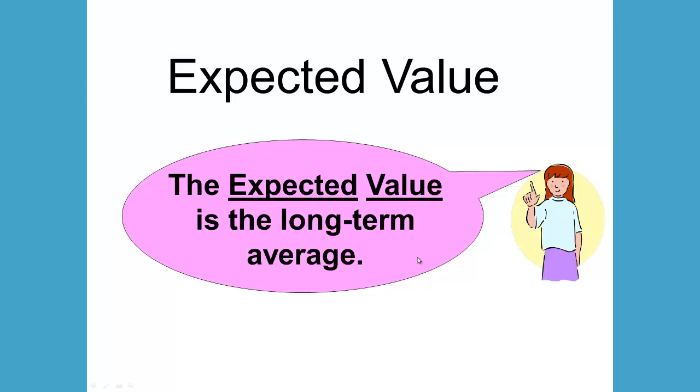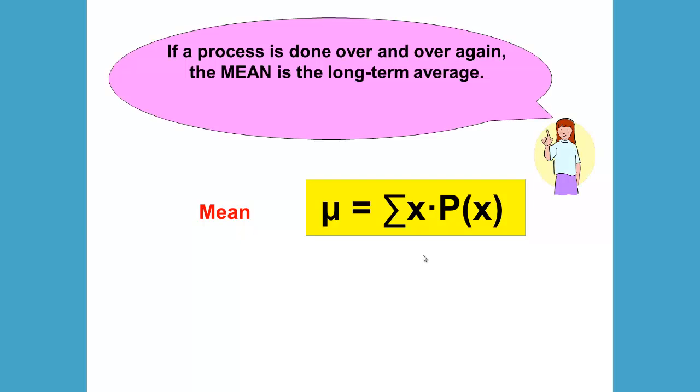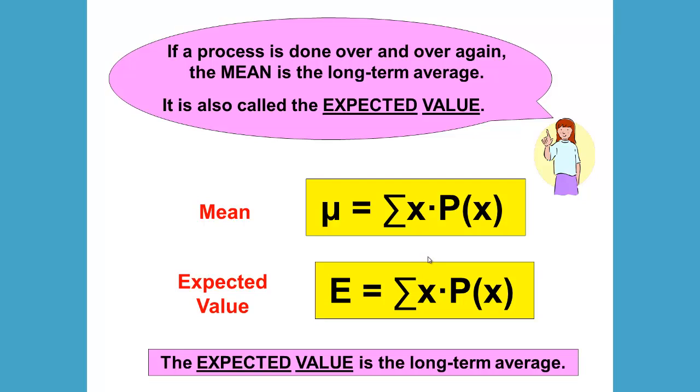The expected value is the long-term average. The formula for the mean is equal to the sum of x times P(x), and if the process is done over and over again, the mean is the long-term average. It is also called the expected value. That gives us that the expected value E equals the sum of x times P(x). In other words, the mean and the expected value have the same formula. The expected value is the long-term average and is a phrase or term that we use when referring to the long-term average.